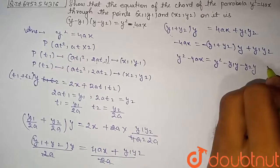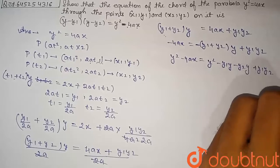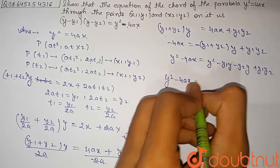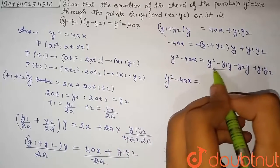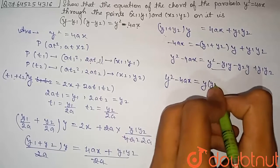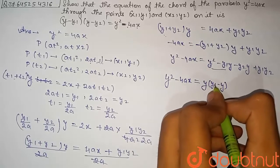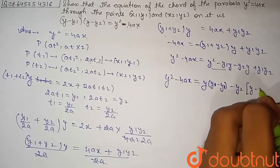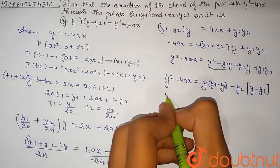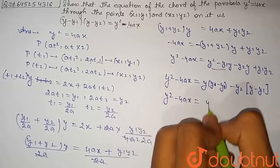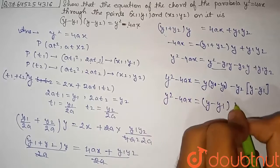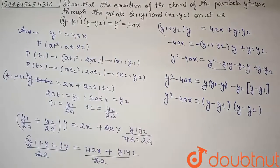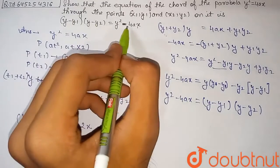Rearranging the right-hand side: y² − y1·y − y2·y + y1·y2. Taking y common from the first two terms gives y(y − y1), and then combining with the remaining terms gives (y − y1)(y − y2). Therefore, y² − 4ax = (y − y1)(y − y2), which is the required equation to prove. Hence proved.